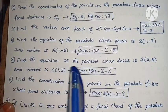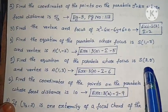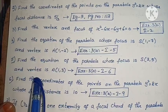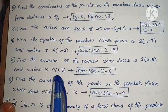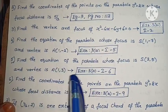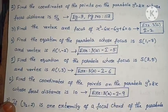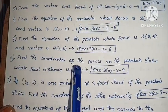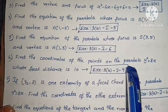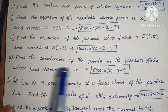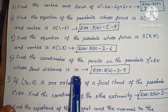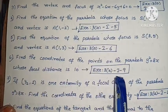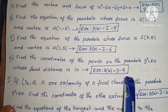Next, find the equation of the Parabola whose focus is (3, 5) and vertex is (1, 3). Exercise 3, first part, sixth problem. Next, find the coordinates of the points on the Parabola y² = 8x whose focal distance is 10. Exercise 3, first part, ninth problem.